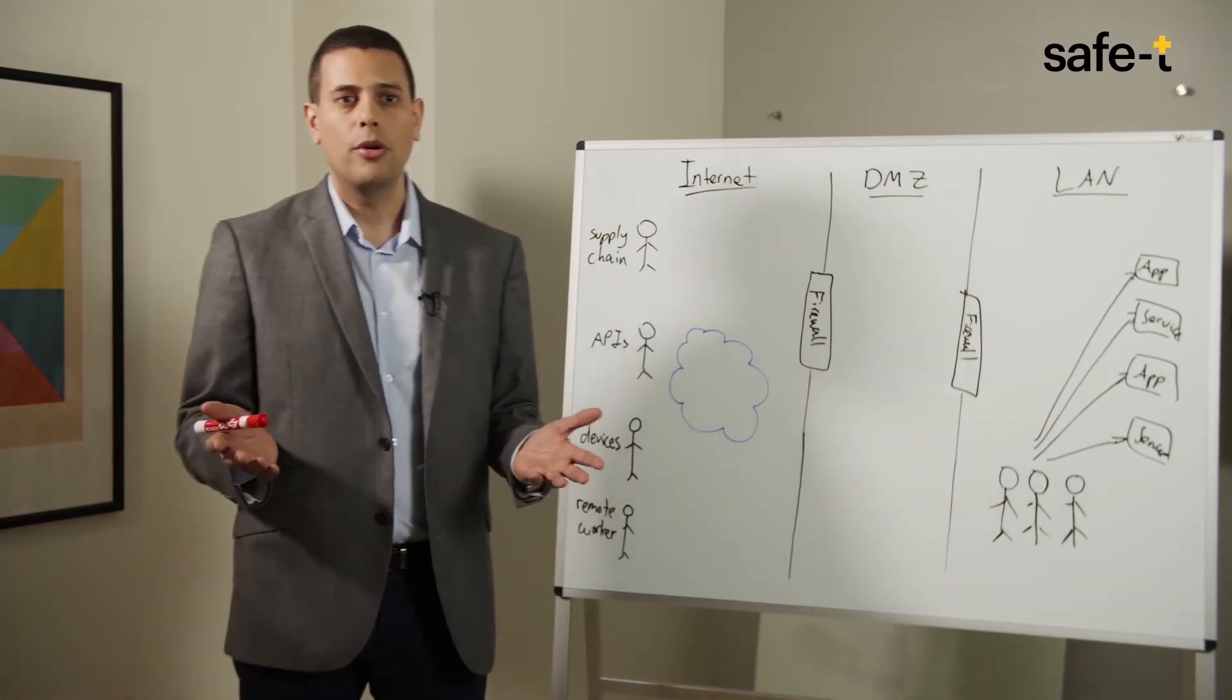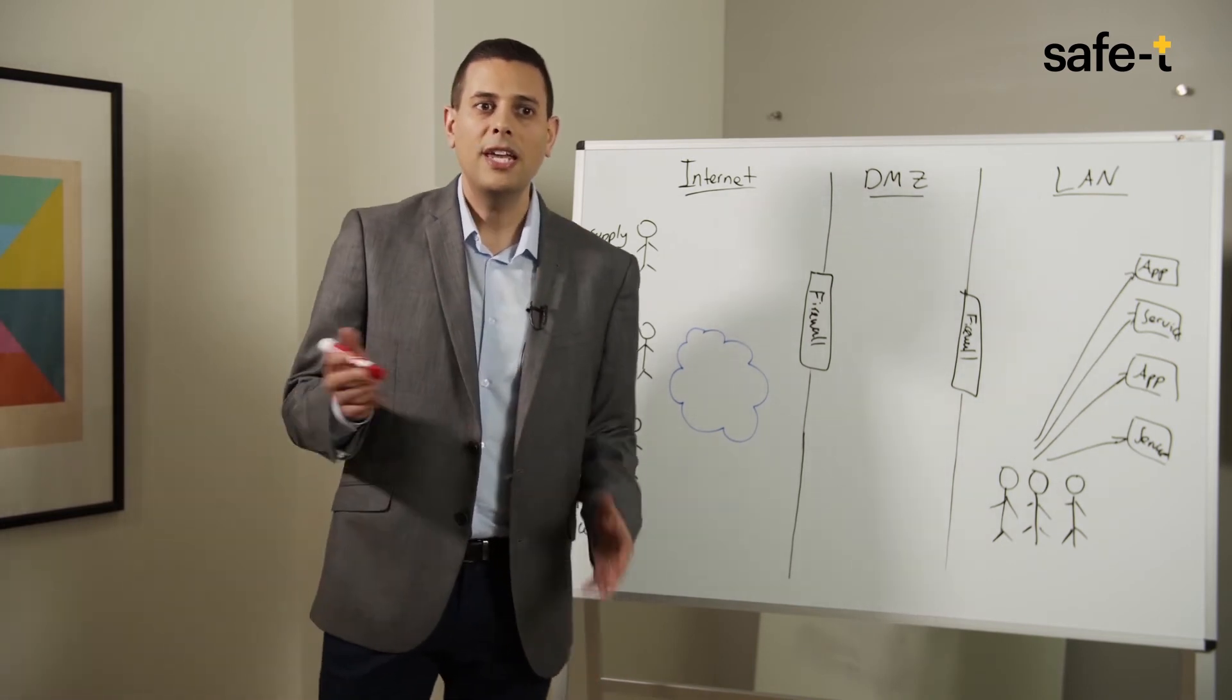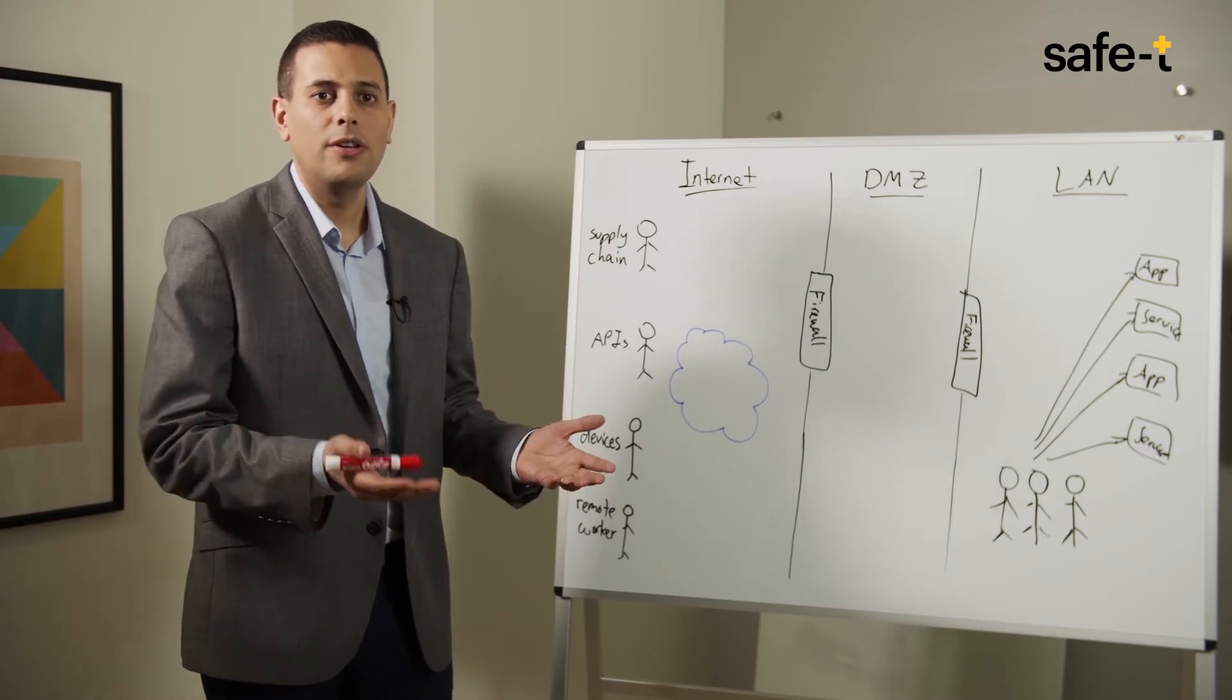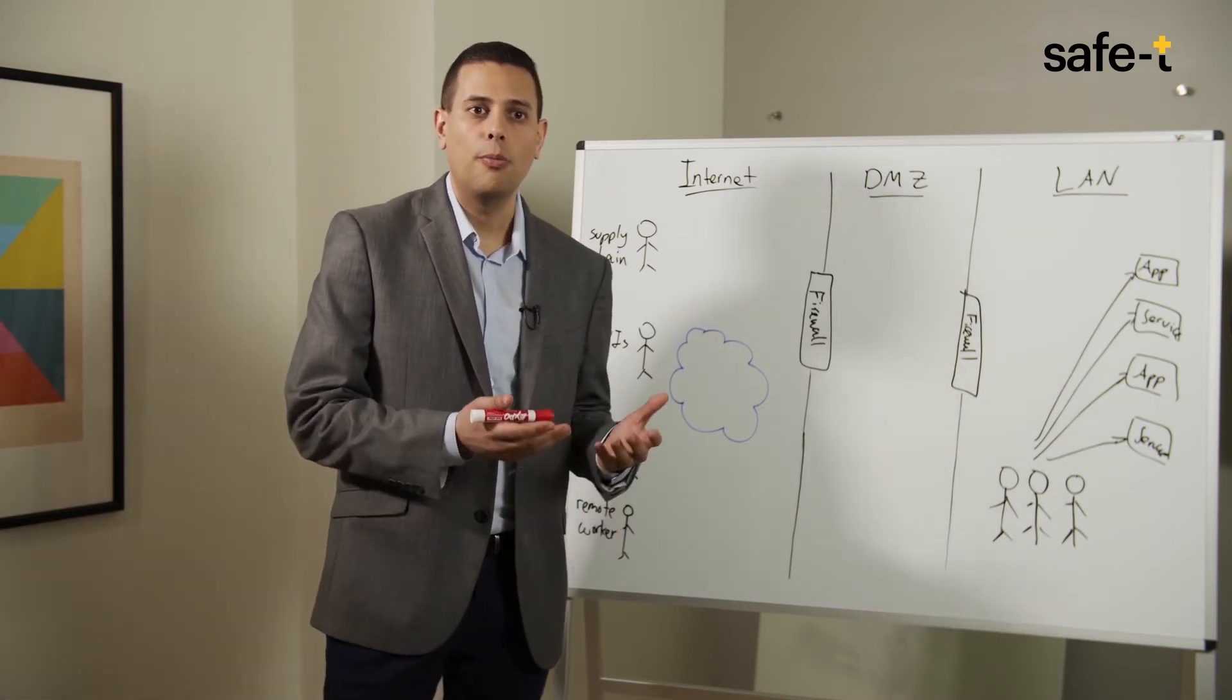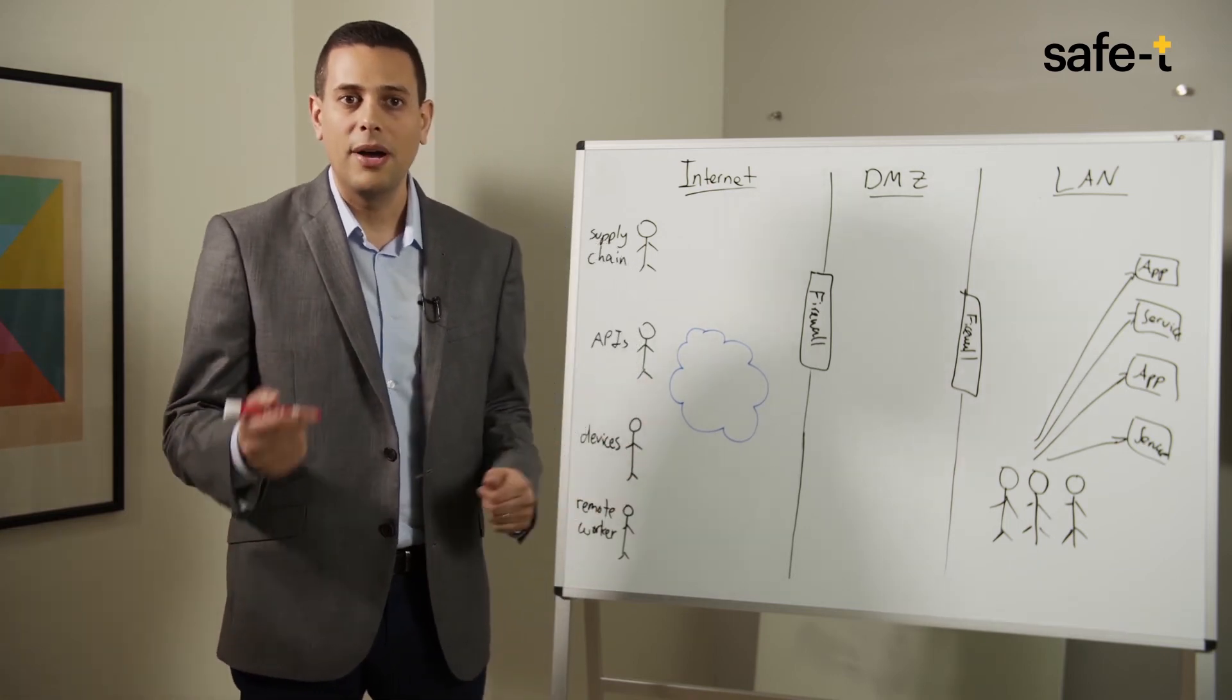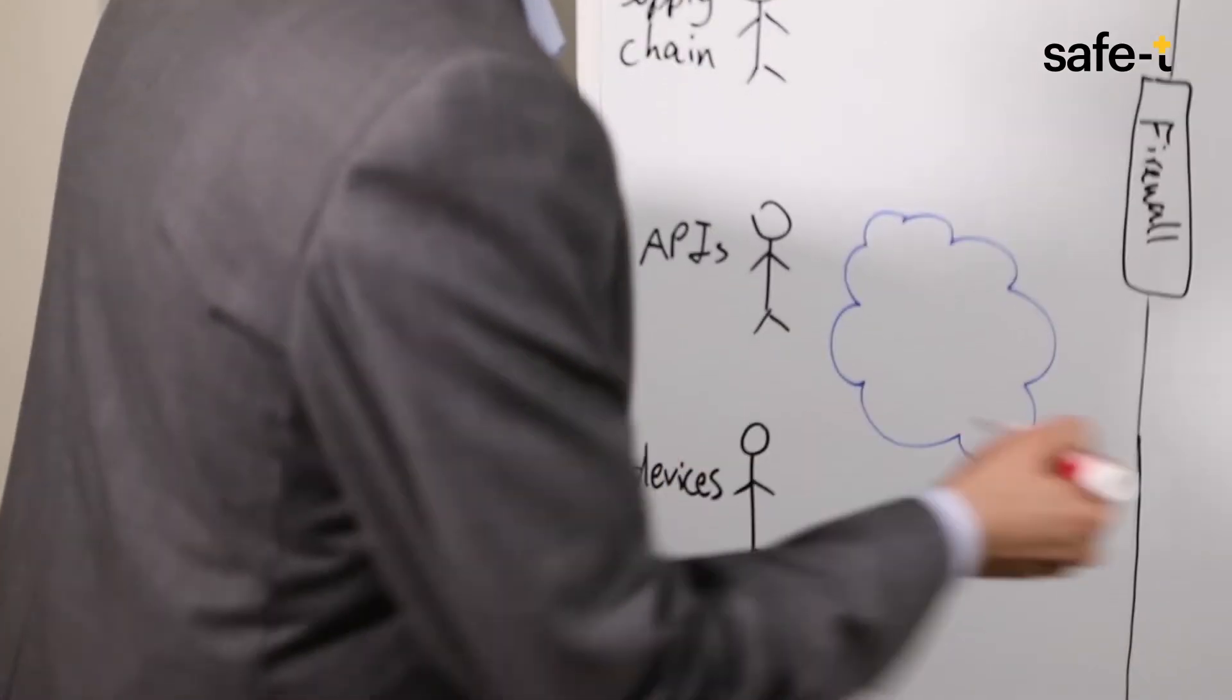A software defined perimeter or SDP turns the model around, making it authentication first, access later. Instead of having a human defined perimeter that has static open ports leading to various access solutions, we actually want to close everything down and by default not accept any inbound traffic from anyone.